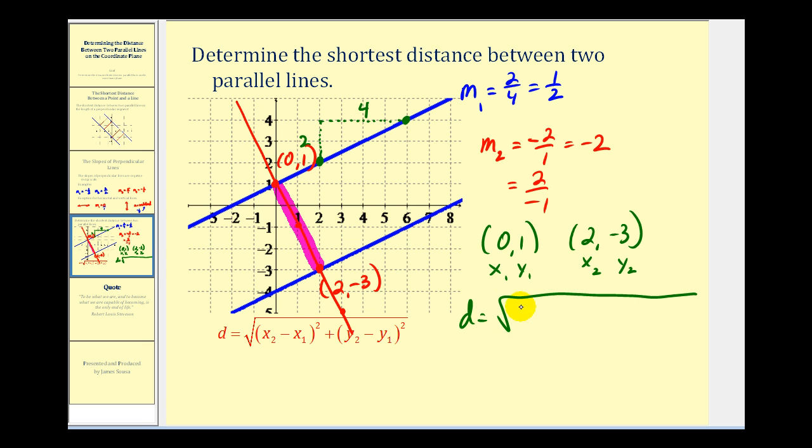So we're going to have the square root of two minus zero squared, plus negative three minus one squared. So we'll have two squared, that's four, plus this is going to be negative four squared, that's sixteen. Distance is equal to the square root of twenty.